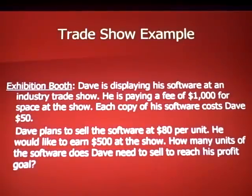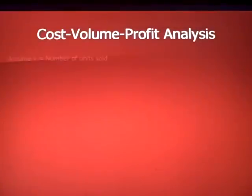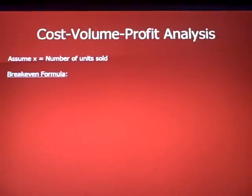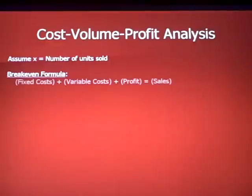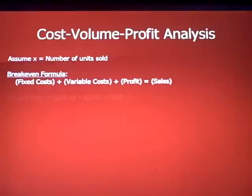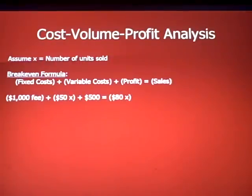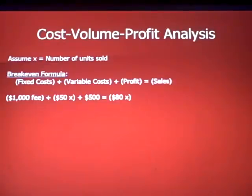The question is: how many units of software does Dave need to sell to reach his profit goal? That brings us into cost-value-profit (CVP) analysis. Let's assume X is the number of units sold. Using the break-even formula from the prior slide, Dave has his fifty-dollar cost per unit, a one-thousand-dollar booth fee, and X is the number of units sold.